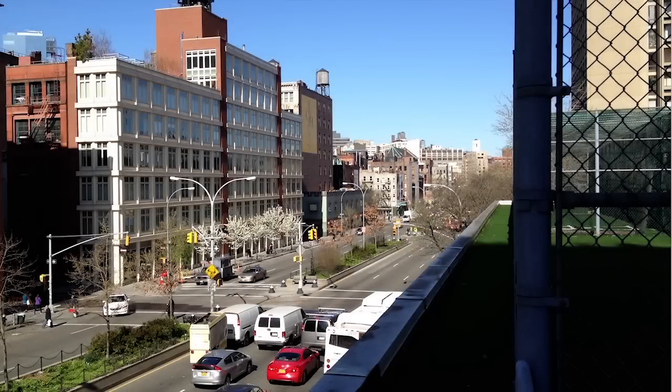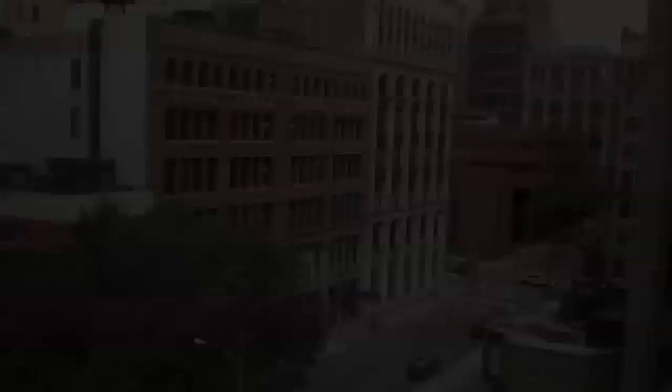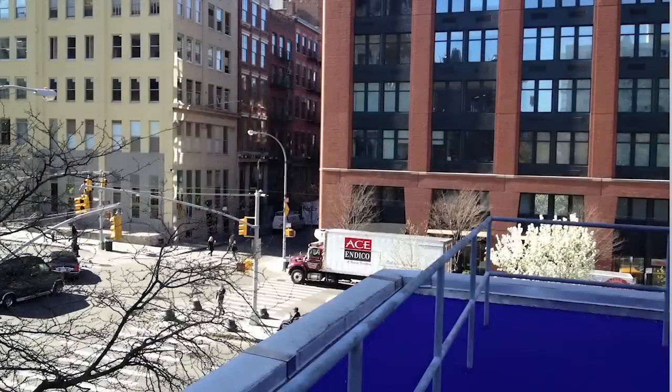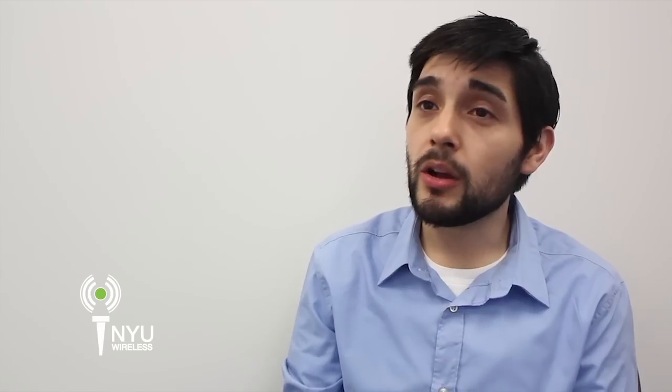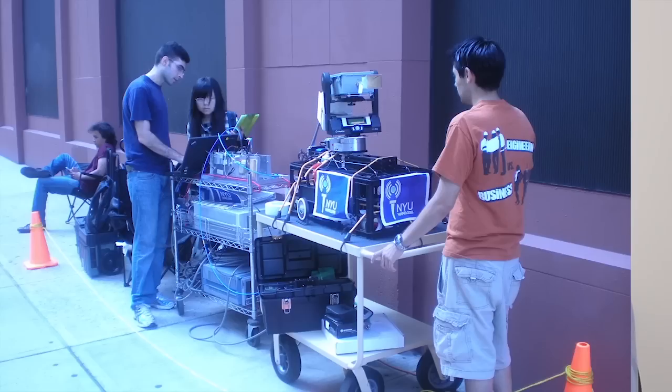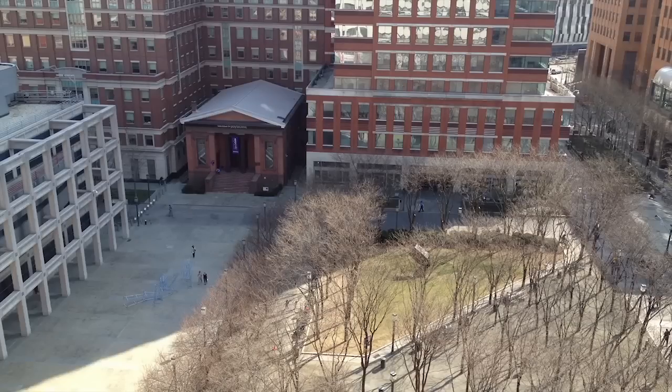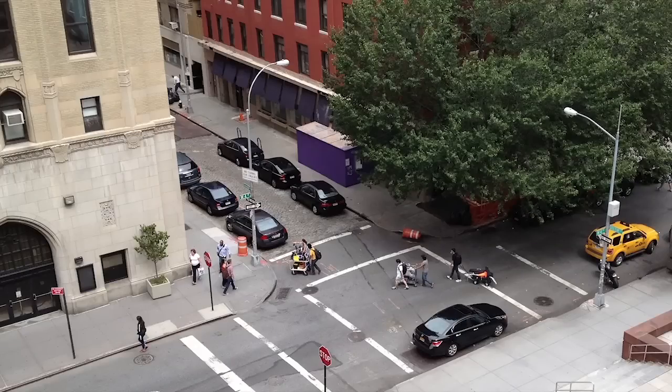We selected various transmitter locations on rooftops and balconies in downtown Brooklyn and Manhattan to mimic cell towers at different heights. We also selected random receiver sites in common pedestrian areas such as sidewalks, courtyards, parks and plazas, all within several blocks of the transmitters.